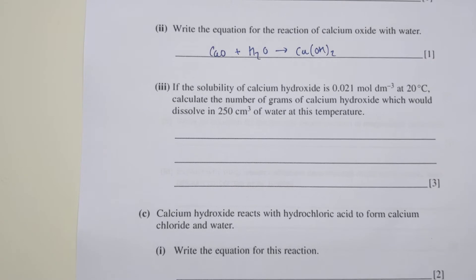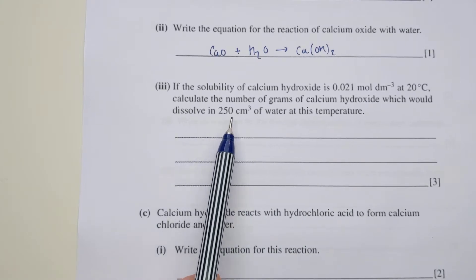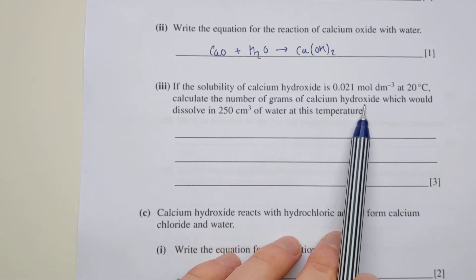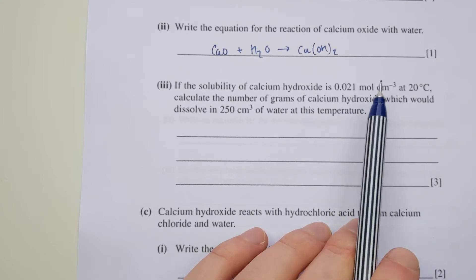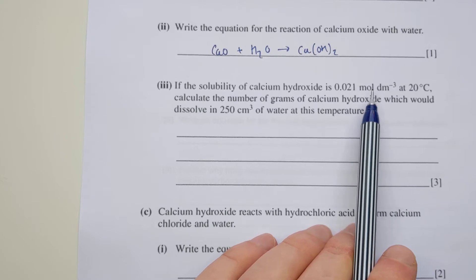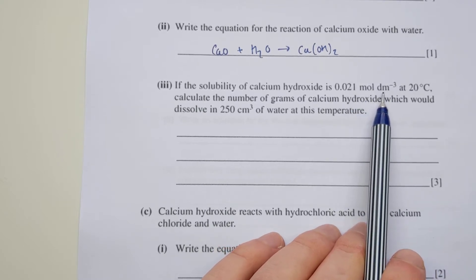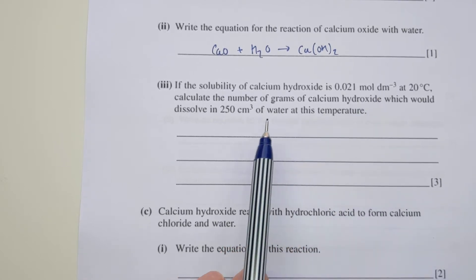Part three you might find a bit tricky. It's about solubility which is on spec but not asked in a conventional sense. It tells you the solubility of calcium hydroxide is 0.021 moles per decimeter cubed at 20 degrees C. It wants you to calculate the number of grams of calcium hydroxide which would dissolve in 250 centimeters cubed of water at this temperature. It's not necessarily one which is on your spec - it's more of an application of your knowledge or logical thinking. The thing it's looking for you to calculate is how many grams would dissolve in 250 of water. You need to convert this unit for solubility - moles per decimeter cubed - into grams per decimeter cubed, then use that to work out how much would dissolve in 250.